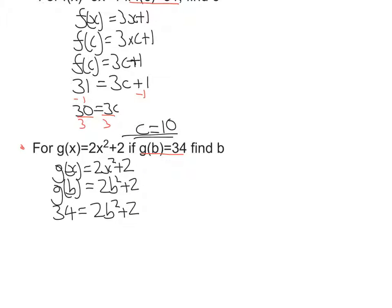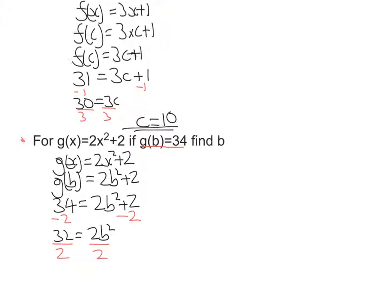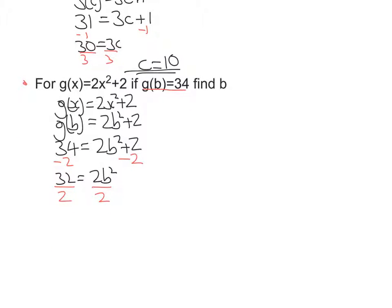Now I can go about solving this. I take away 2 from both sides so that I only have one number term: 32 = 2b². Then I'm going to divide both sides by 2 to get the b² on its own. 32 divided by 2 is 16 = b². And to get rid of the square, I do the opposite, which is square rooting.